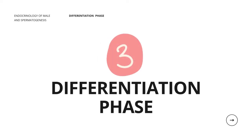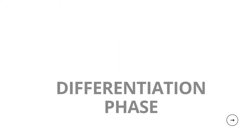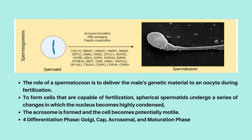In the differentiation phase, the role of a spermatozoon is to deliver the male's genetic material to an oocyte during fertilization. To form cells capable of fertilization, spherical spermatids undergo a series of changes in which the nucleus becomes highly condensed, the acrosome is formed, and the cell becomes potentially motile. Motility requires the development of a flagellum and a metabolic power plant known as the mitochondrial helix.